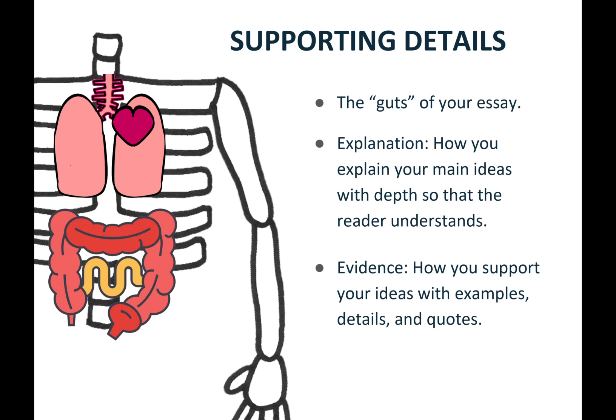Moving on to the guts of your essay — we call these supporting details and explanation. A main idea often requires further elaboration for the reader to understand what you mean. You then have to support your explanation with evidence that makes your ideas convincing to the audience, which might include examples, details, or quotes from a text you're referring to. A good analytical essay includes a good balance of explanation and evidence so that the reader can fully understand your ideas and finds them convincing and well rooted in evidence. These are the guts that support the main ideas, and those main ideas are the ribs that hold in and organize the guts.